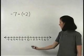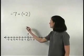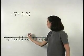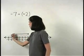So starting at zero on our number line, negative 7 moves us 7 units to the left.